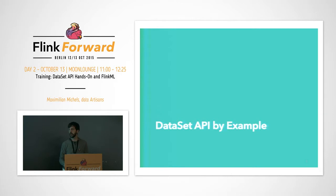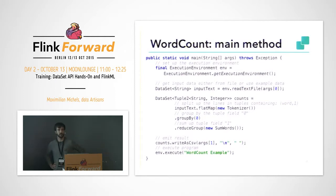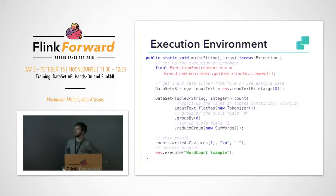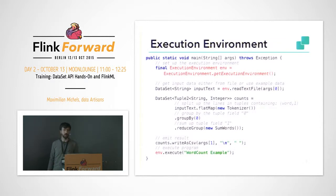To give you an idea of how the DataSet API looks, let's first look at an example. And of course, what could be a better example than the word count? This is a full word count in the DataSet API. It starts with the main method, and then the first thing you do when you write the program is create an execution environment, which holds the context of your execution. This is a kind of starting point for every program you write using Flink.